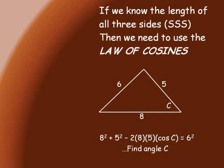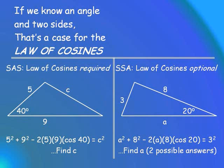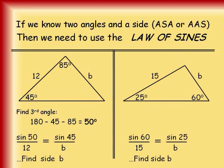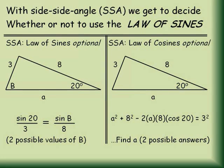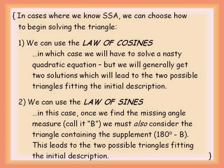If we know the length of all three sides, then we need to use the law of cosines. If we know an angle and two sides, that's the case for the law of cosines. If we know two angles and a side, then we need to use the law of sines. With side-side-angle, we get to decide whether or not to use the law of cosines. Careful with side-side-angle!